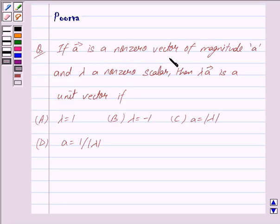If vector A is a non-zero vector of magnitude A and lambda is a non-zero scalar, then lambda vector A is a unit vector if: